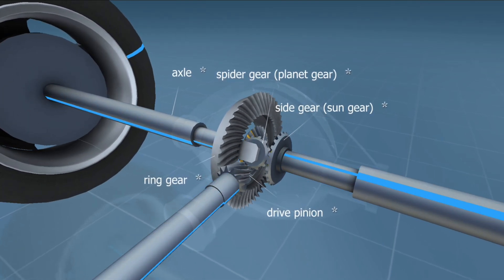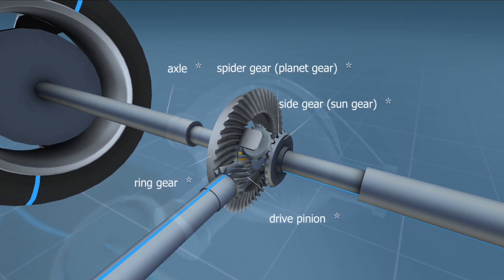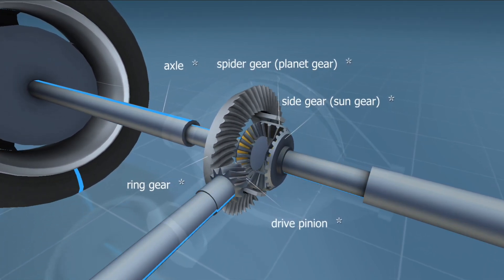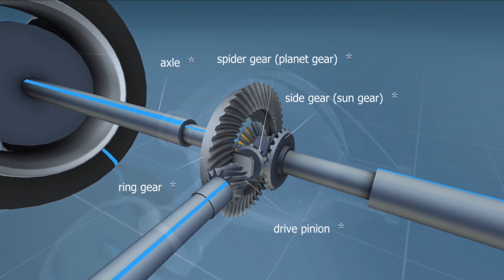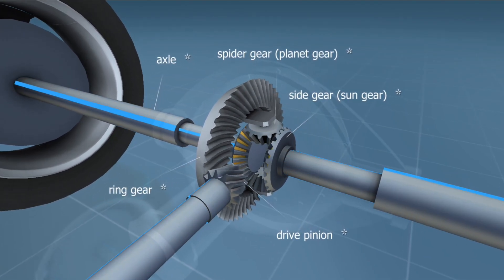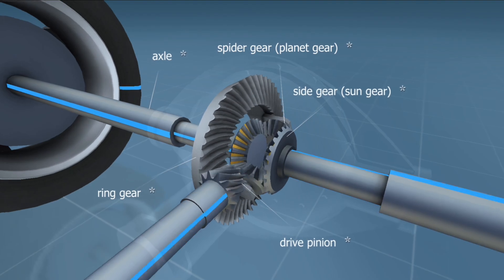The pinion at the end of the drive shaft rotates the ring gear, transmitting the power to the spider gears, which engage with the side gears fixed on the axles, transmitting the power to the wheels.